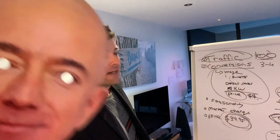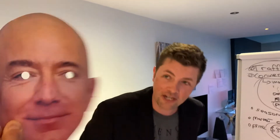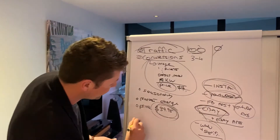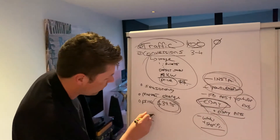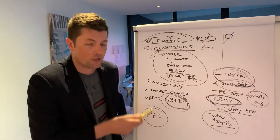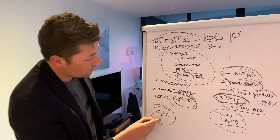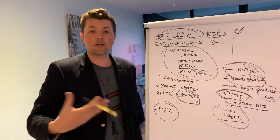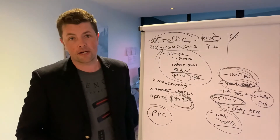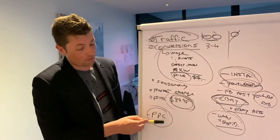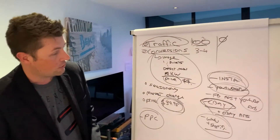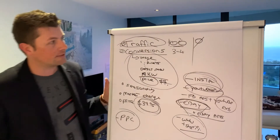Also, pay-per-click on Amazon — if you haven't already, you can run pay-per-click ads on Amazon for your product range. We have a training video in the members area showing you how to do that as well.